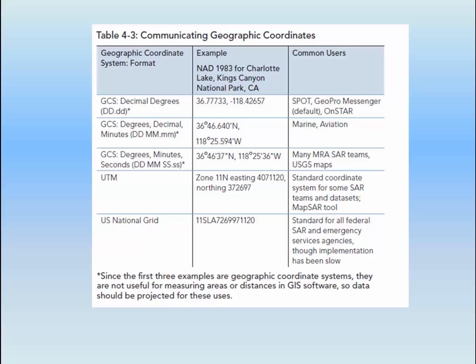Last of the geographic coordinate systems is the familiar degrees, minutes, seconds, represented as DMS — latitude, longitude — or often lat-long. You'd read them as 36 degrees, 46 minutes, 37 seconds north by 118 degrees, 25 minutes, and 36 seconds west. It's important that you carefully identify each number as degrees, minutes, or seconds. Don't use pauses between numbers assuming the other person knows that a pause is supposed to represent degrees. Many SAR teams and all USGS paper maps use lat-long.